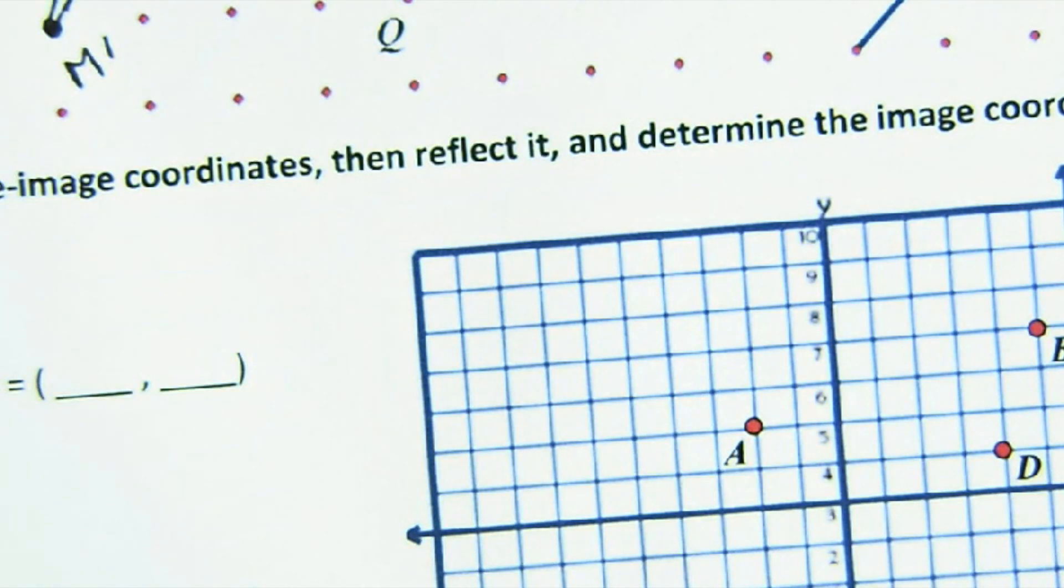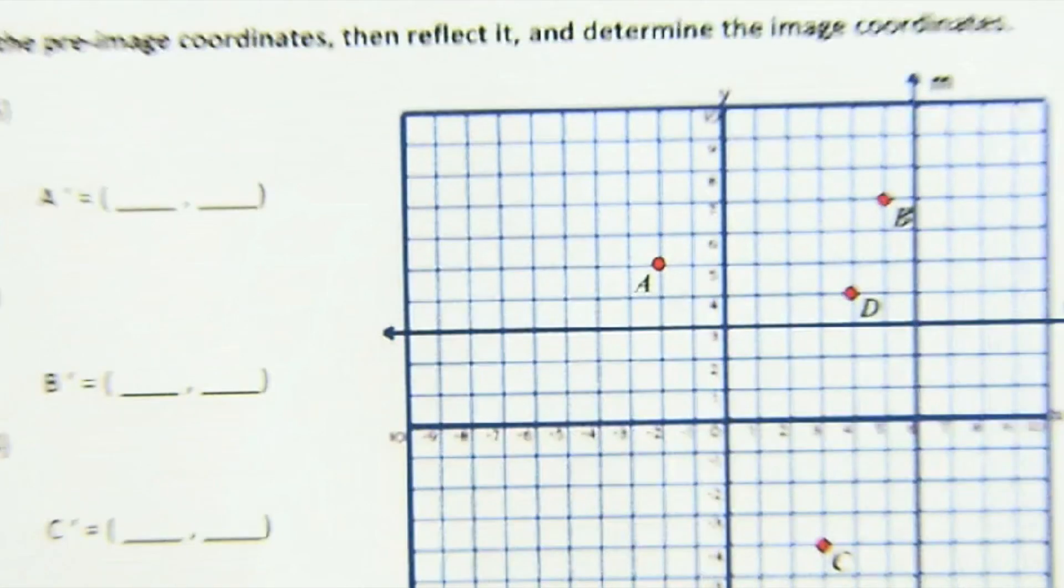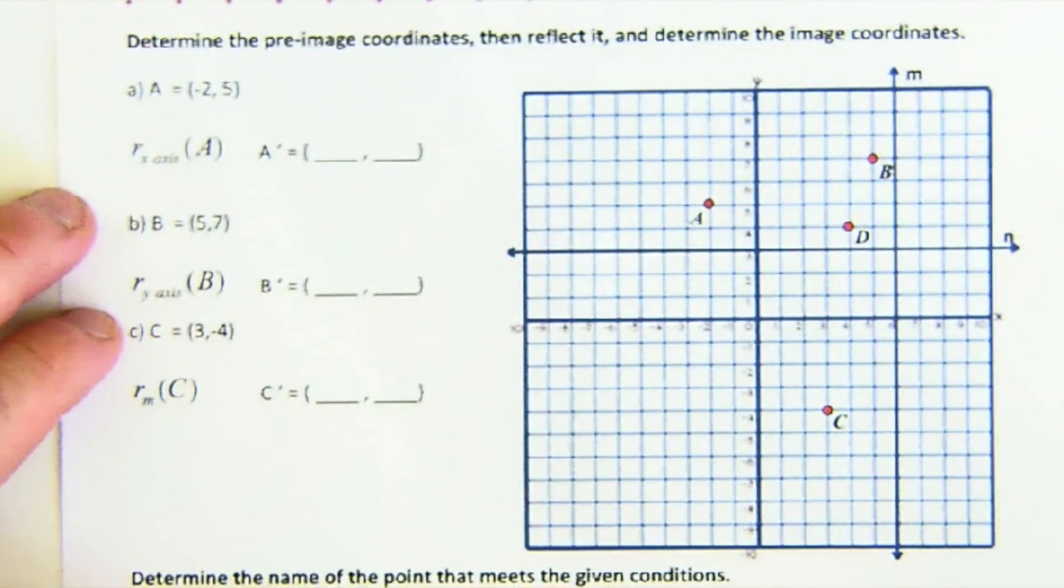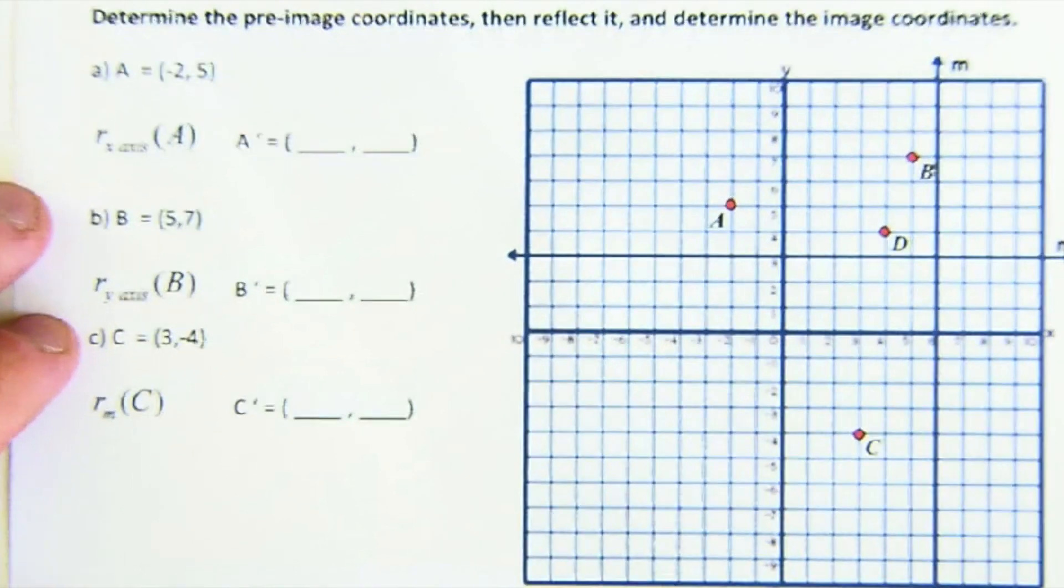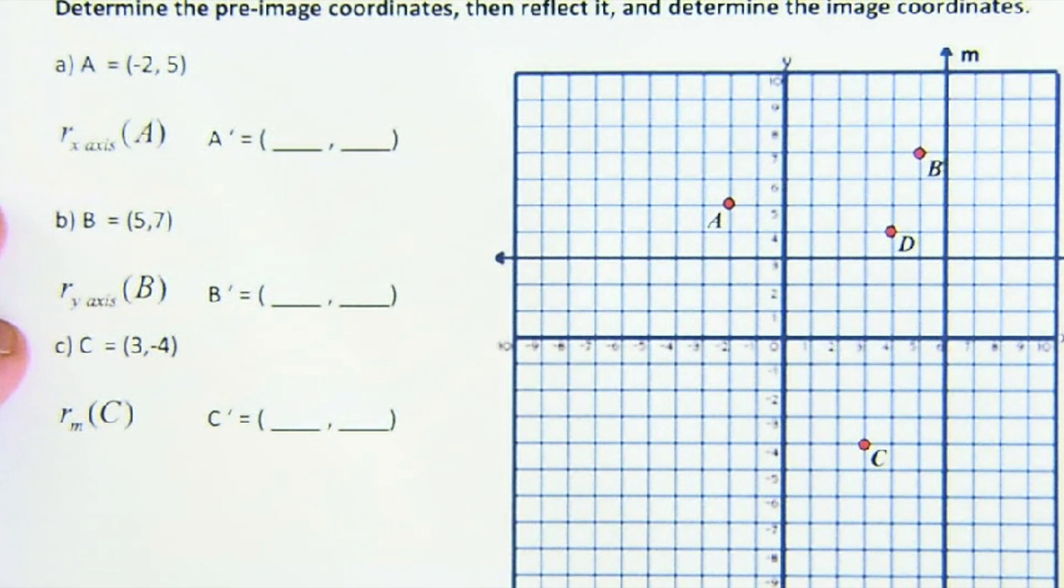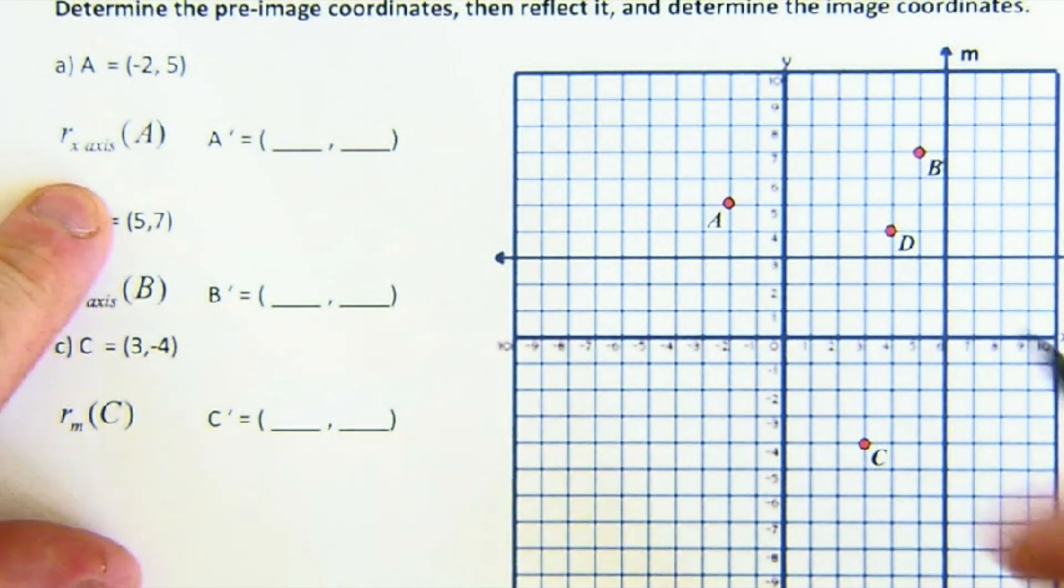The second component is to kind of look at what goes on on a grid when we reflect. We're going to just reflect over a couple of different locations. This says reflect over the x-axis.